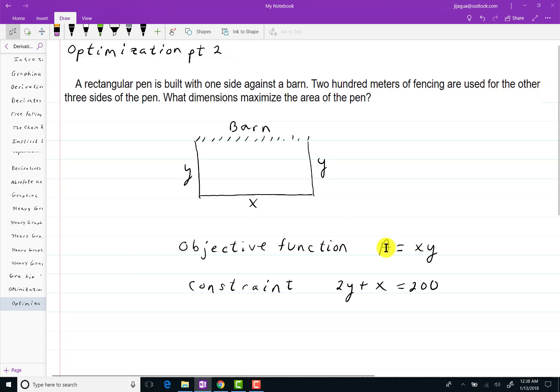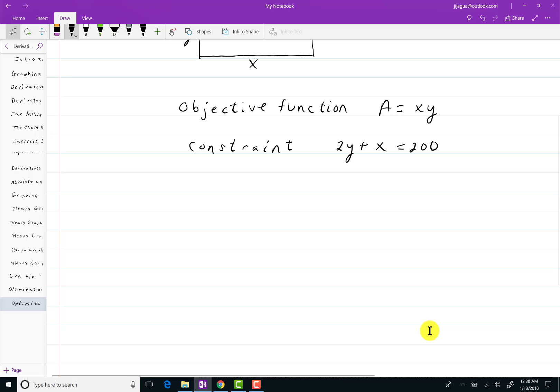Now to do anything with this function, I need to get it to one variable. So I need to either solve for x or y in here. I think it's easier to solve for x here. So when I rewrite my objective function, A = xy, I think what I'll do is solve for x here and get (200 - 2y) times y. And I'll call that now A(y). So y is my variable.